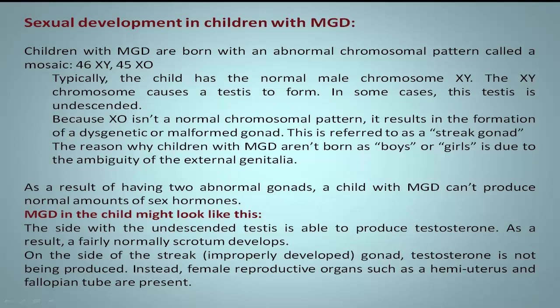Typically, the child has the normal male Y chromosome. The Y chromosome causes a testis to form. In some cases, this testis is undescended.